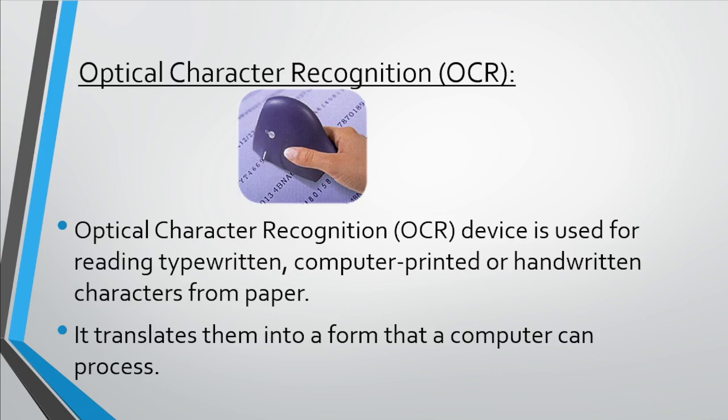Next is optical character recognition (OCR). OCR is a device used for reading typewritten, computer-printed, or handwritten characters from paper. It translates them into a form that a computer can process. It has a device that emits a light which reflects off each character and returns back, generating a pattern that is sent to the computer. OCR software then generates a character based on the scan result. OCR is better because character-by-character scanning is done.